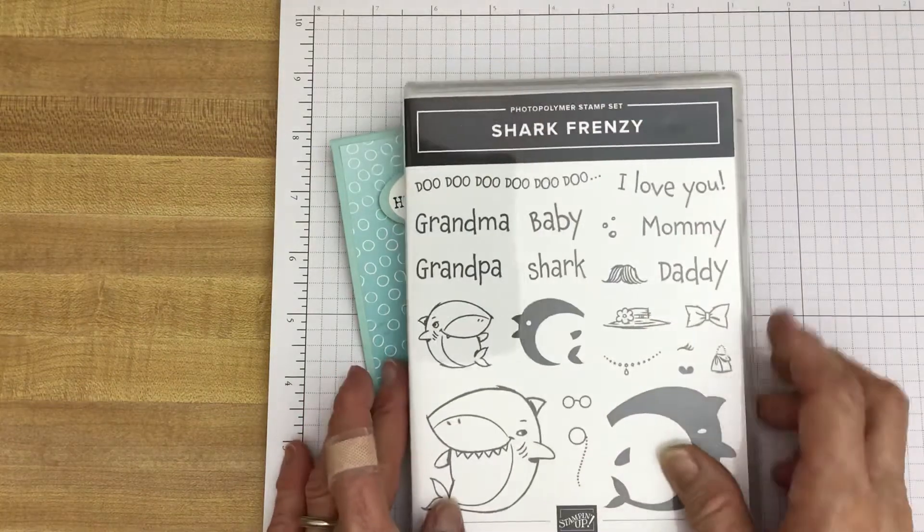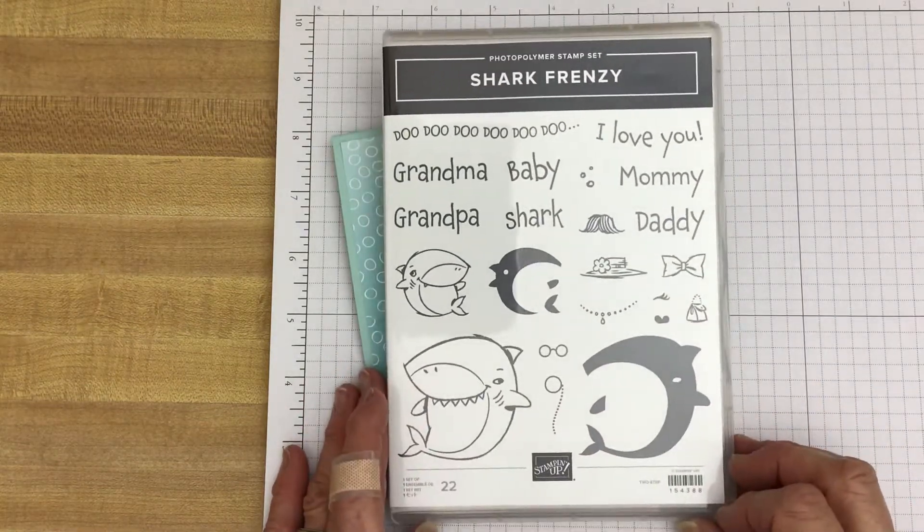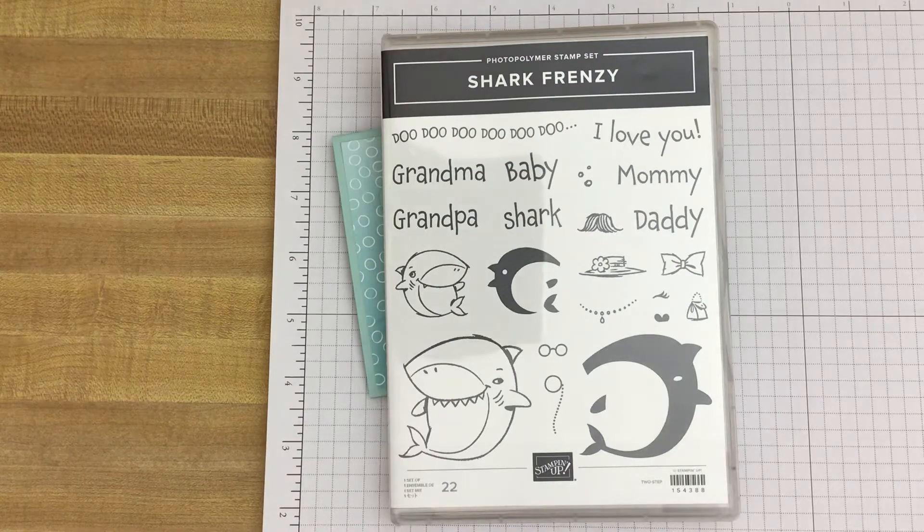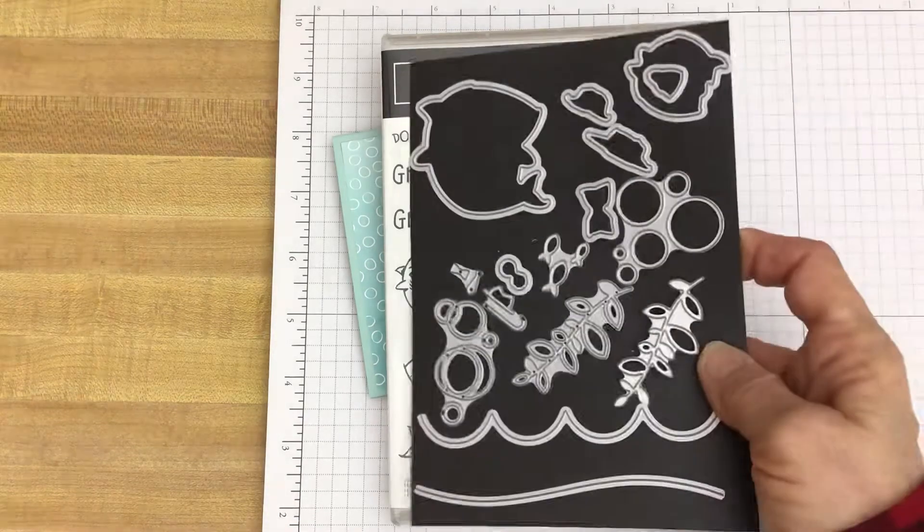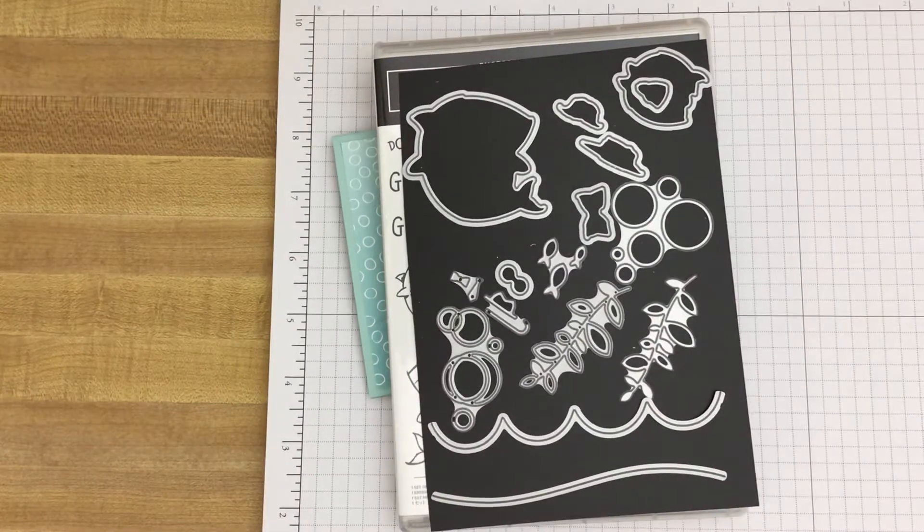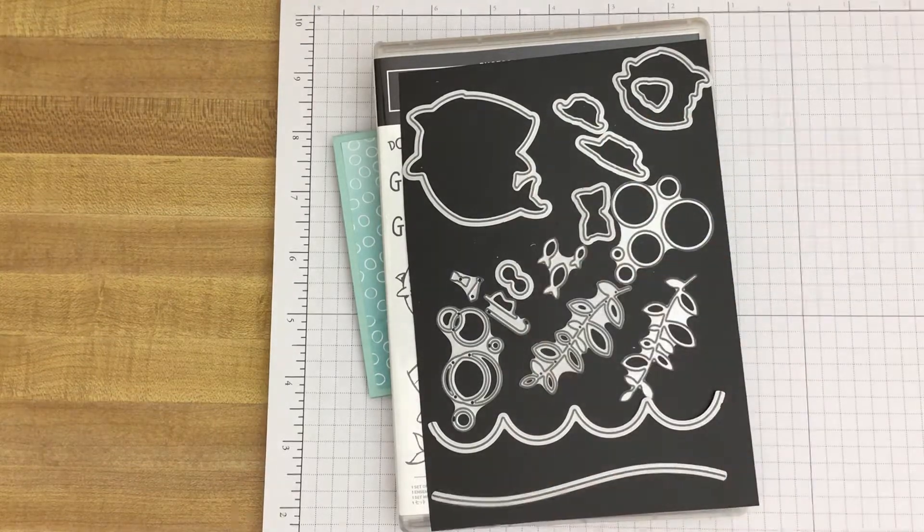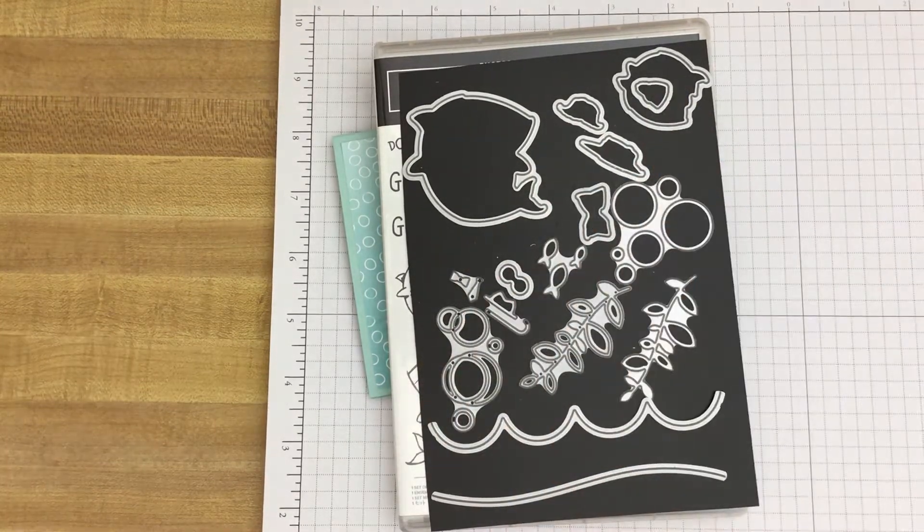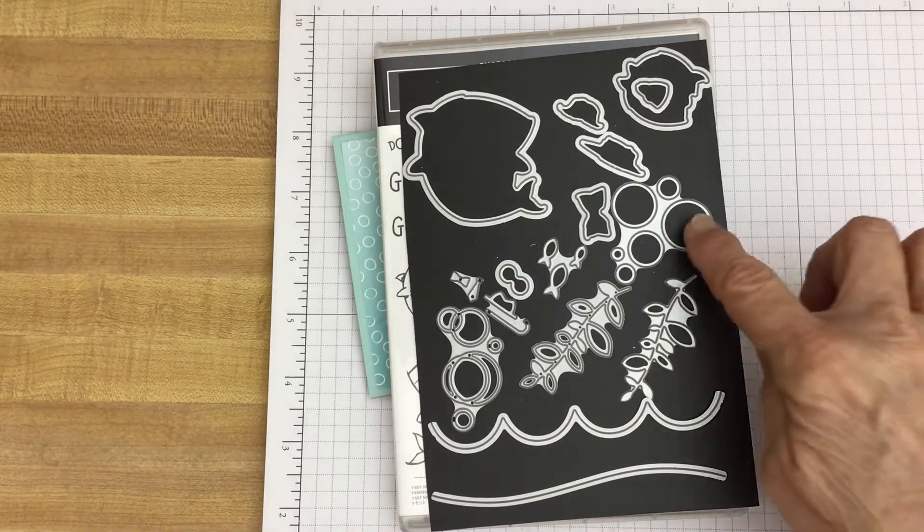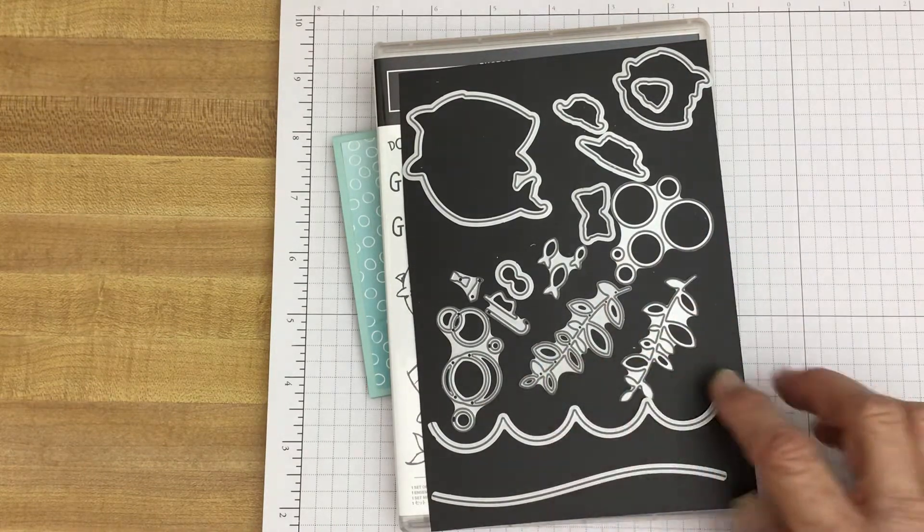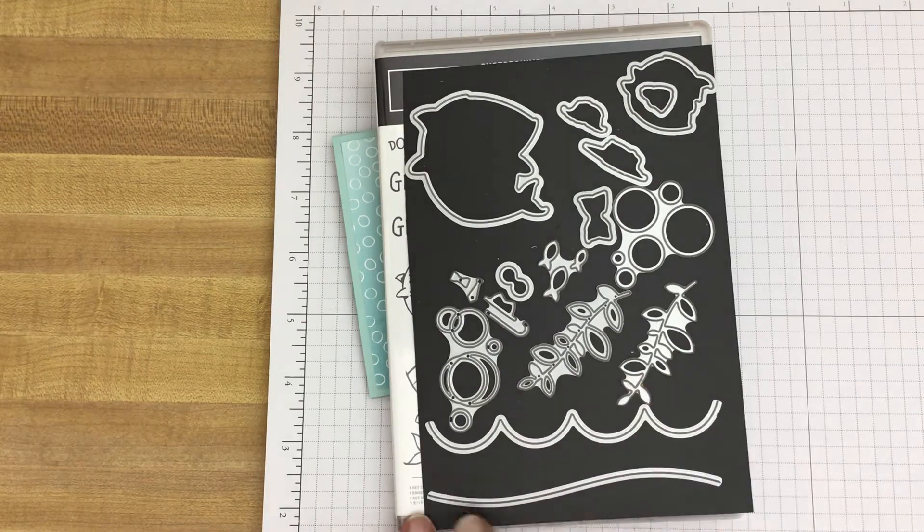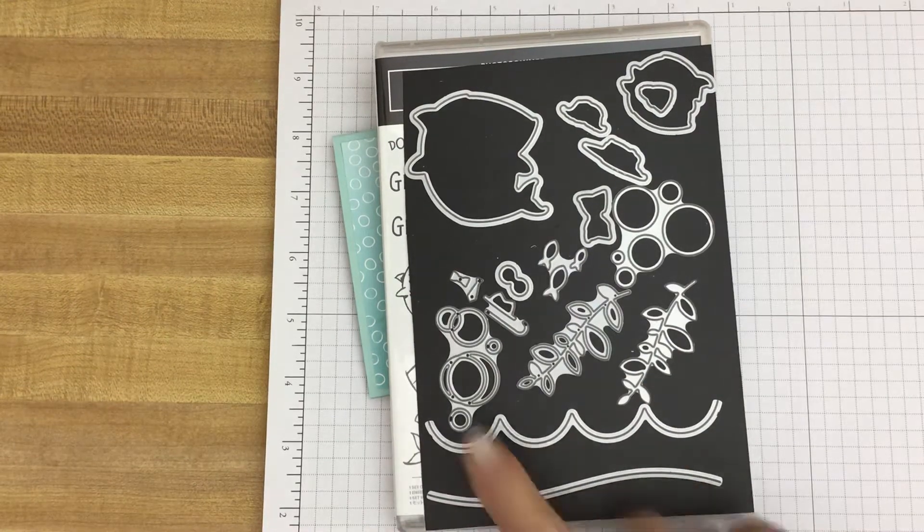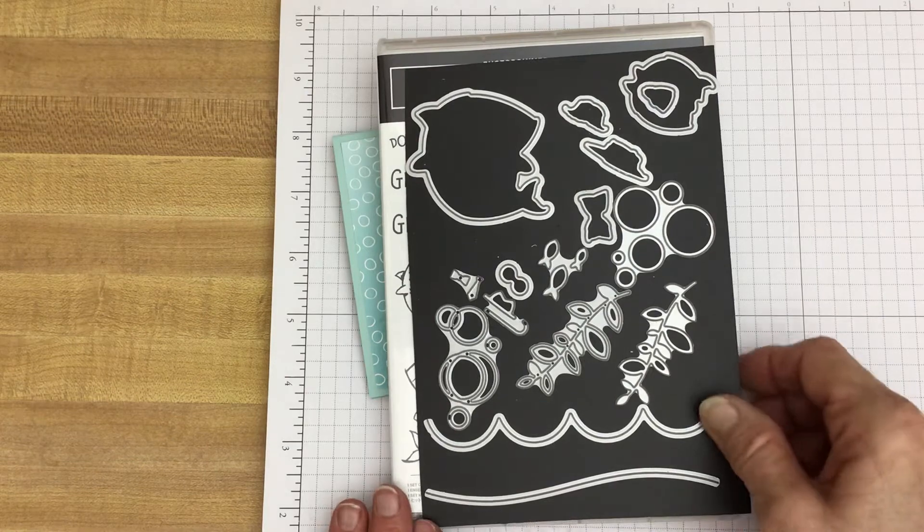Here is the Shark Frenzy stamp set. And it has matching dies. 16 dies that cut out the sharks and also various little accessories for your shark. And then there are some bubbles, some seaweed, and ocean waves or a nice little not so wavy ocean wave.